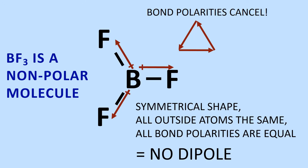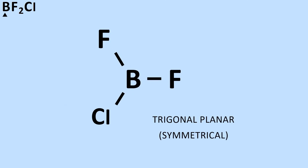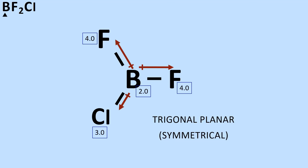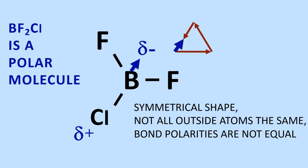Let's do something interesting — let's replace one of the fluorines in BF3 with a chlorine to get BF2Cl. It is still trigonal planar, still a symmetrical shape, but the electronegativity differences for each bond are no longer the same. The boron-chlorine electronegativity difference is only half that of the boron-fluorine bond. Adding the bond polarity vectors results in a non-zero vector, which is the dipole. BF2Cl is a polar molecule.